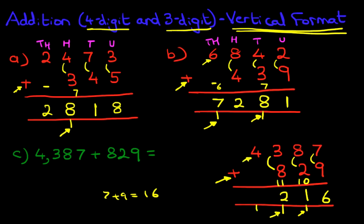And lastly, we've got the thousands. We've got 4 plus 0, which is 4. Don't forget the 1 over here. 4 plus 1 is 5. So, 4,387 over here plus 829 is 5,216.